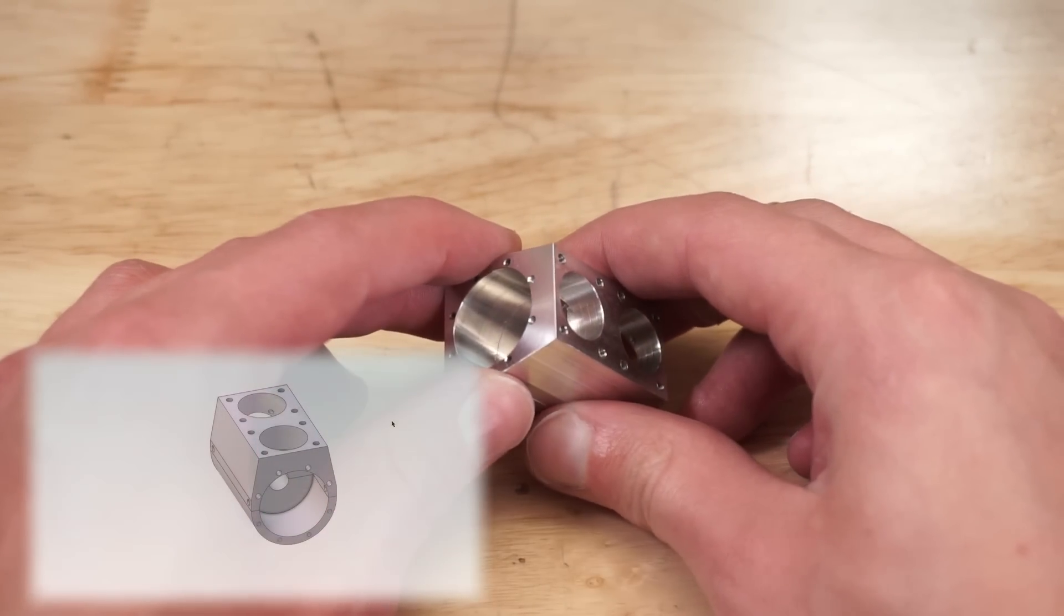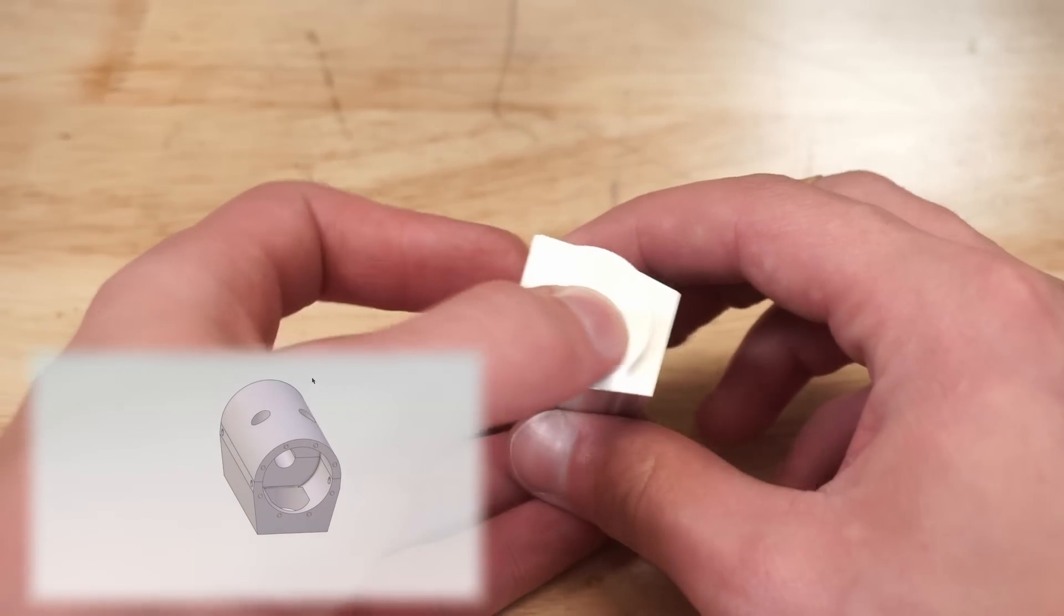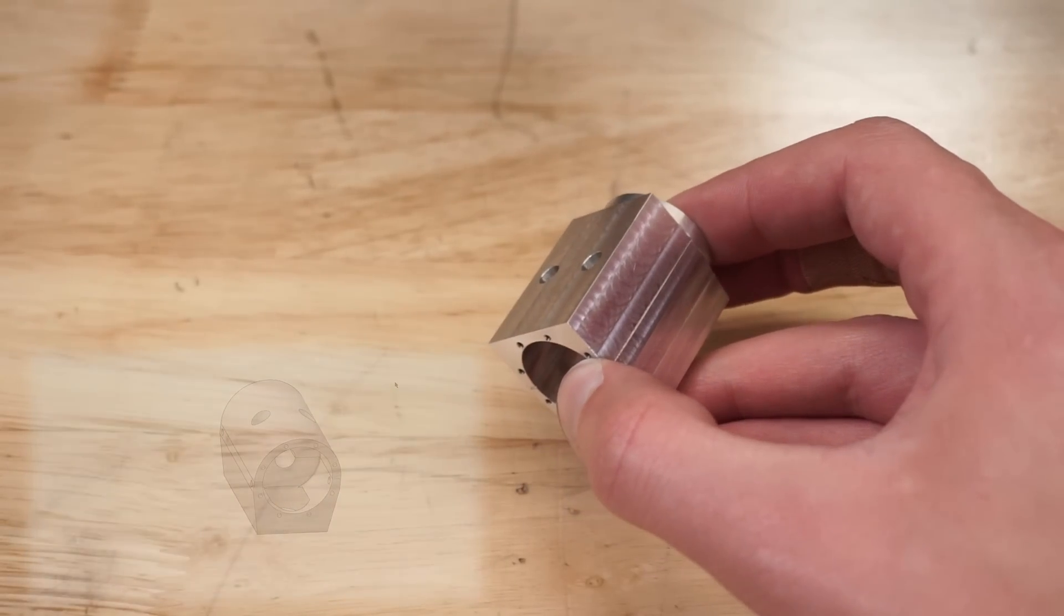For the bottom half we still have to round it off. So I made a few of these plugs that are the right diameter. Now we can clamp it in a vise and file it down to the plugs.